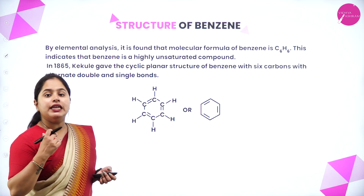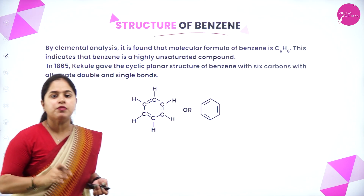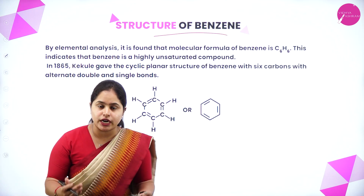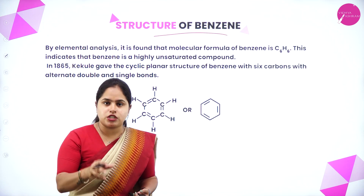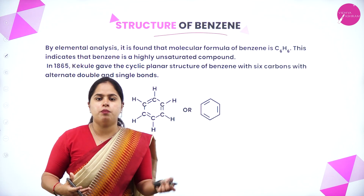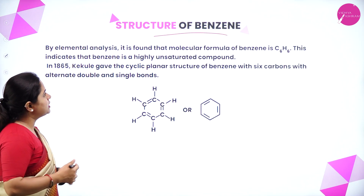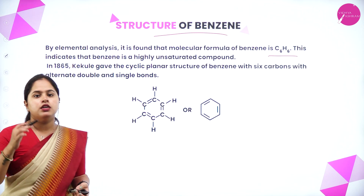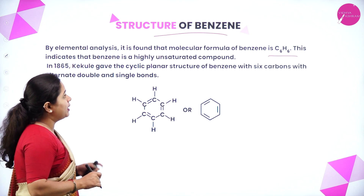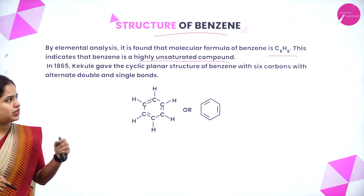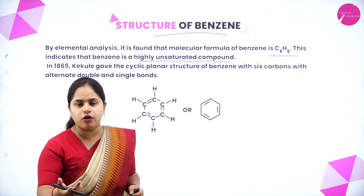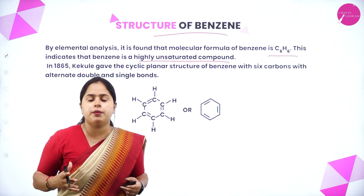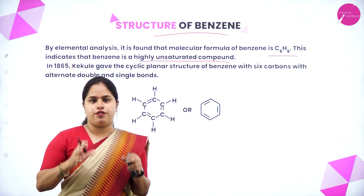Now we are going to study in detail about the structure of benzene. In aromatic hydrocarbons, we will be focusing on the benzenoid compounds. To study about that, we should know in detail about the structure of benzene — what types of bonds it forms, whether sigma bonds or pi bonds. By elemental analysis, the molecular formula of benzene is C₆H₆, with six carbon atoms and six hydrogen atoms, indicating that benzene is a highly unsaturated compound.